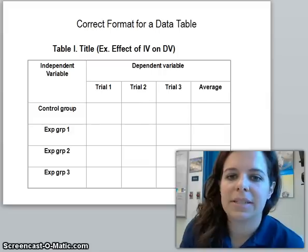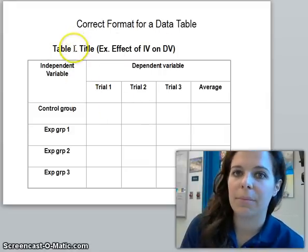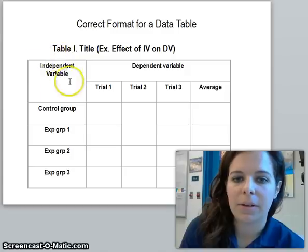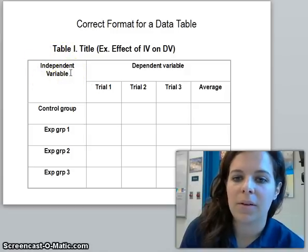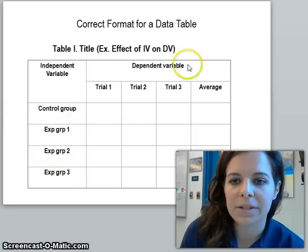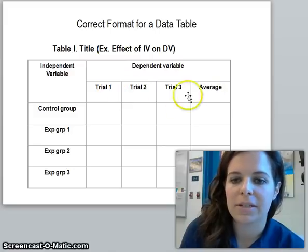This is what your data table should look like. You should have a title as well as a number for your data table. Your independent variable should be in the left-hand column with your control groups and experimental groups below. Then your dependent variable should be across the top with your trials and averages below that.